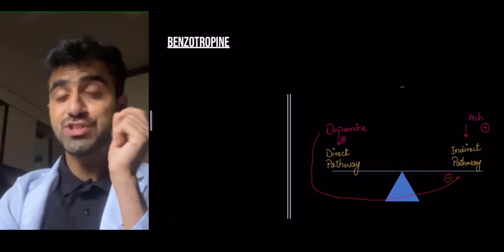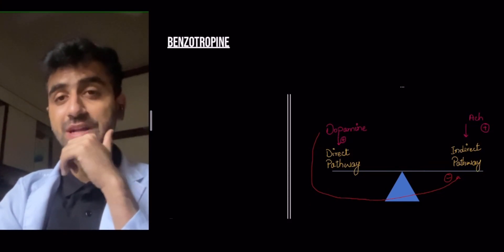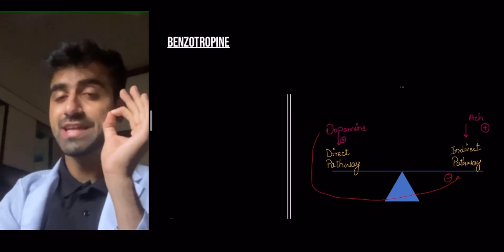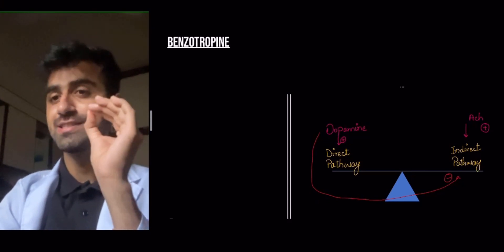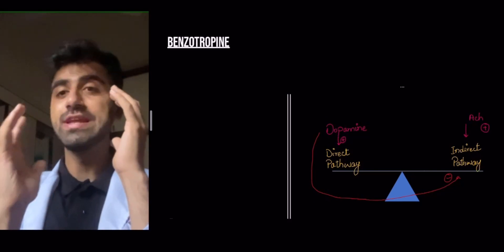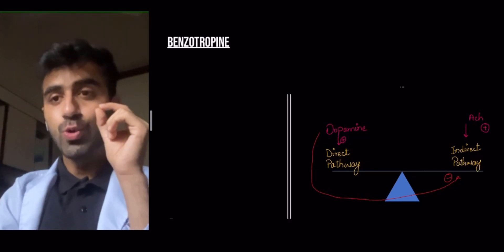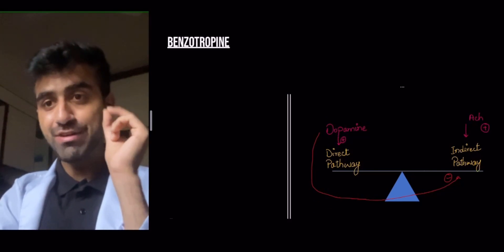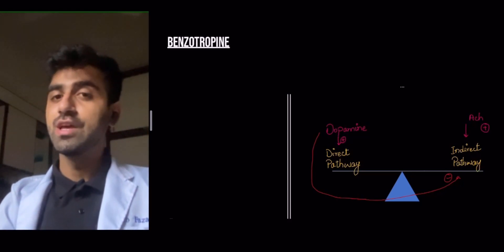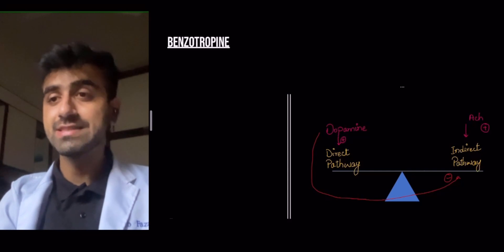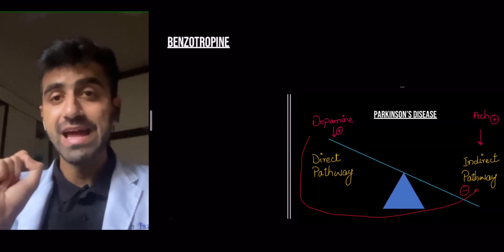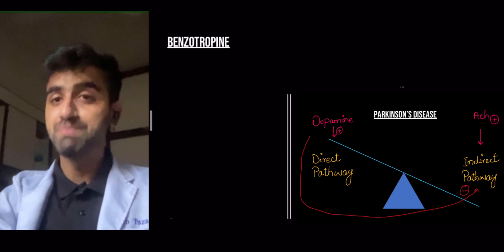Now let's look at benztropine. Benztropine is important because it helps illustrate the basic pathophysiology of Parkinson's. In Parkinson's, dopamine is decreased whereas acetylcholine is increased, so the dopamine-to-acetylcholine ratio is decreased. You want to inhibit that excess acetylcholine, and therefore you give anti-muscarinics such as benztropine.